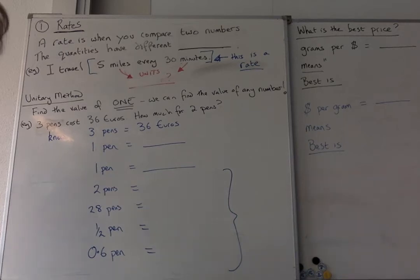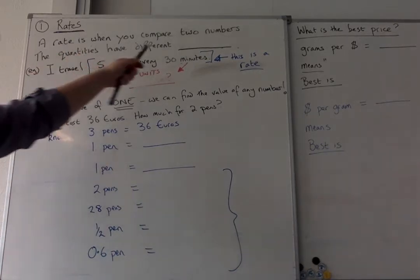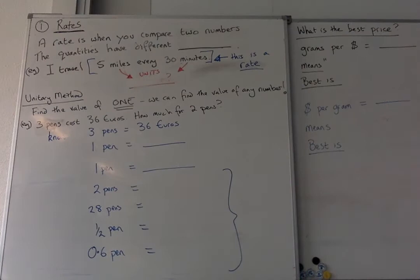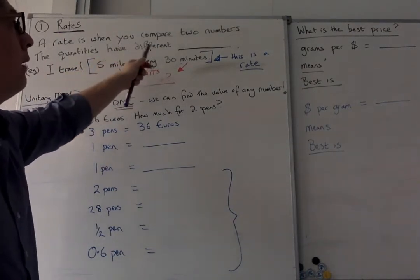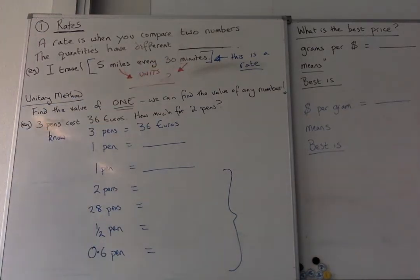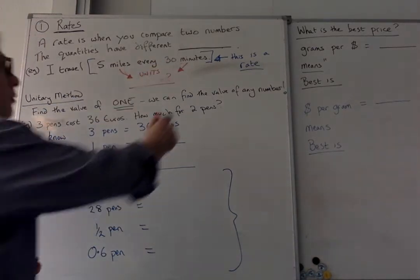Hello again. Last time in class we talked about ratios and we said that a ratio is when you compare two numbers. A rate is also when you compare two numbers. When we talked about ratios we said that the quantities that we're comparing have the same something, the same units. In fact for a rate they have different units.